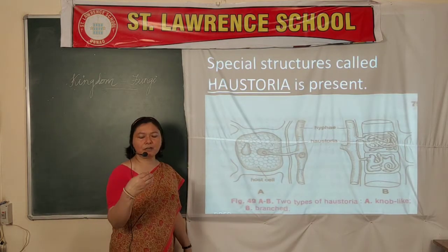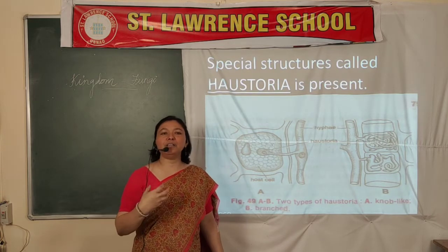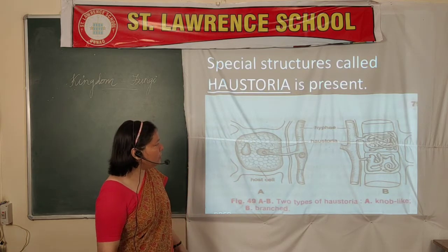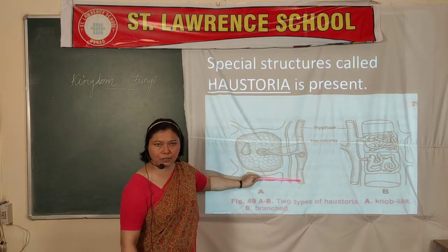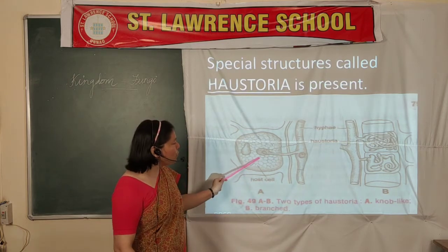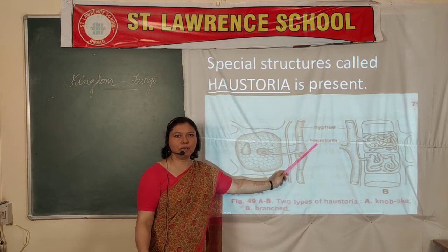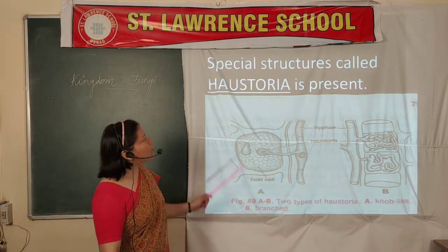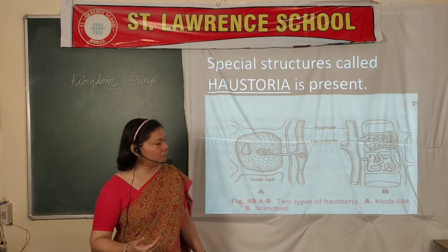Another type of structure comes out from the hyphae, basically to derive nutrition from another plant or organism. A single septate hyphae brings out an extension which goes into a host cell. This structure is called a haustorium — a specialized structure coming out from the hyphae to allow fungi to derive nutrition from the host cell.